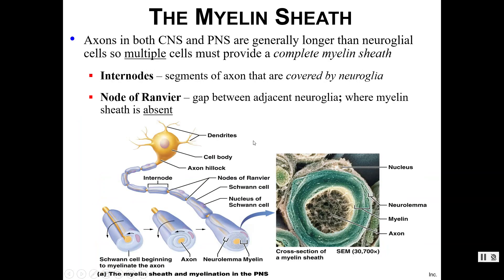Axons within both the central and peripheral nervous systems are generally longer than the neuroglial cells themselves, because they've got this big long axon. So you're going to have to have multiple cells creating the myelin sheath. Each one of these little blue sections is a Schwann cell — so this would be a neuron in the peripheral nervous system — and each Schwann cell is wrapping its plasma membrane around the axon.